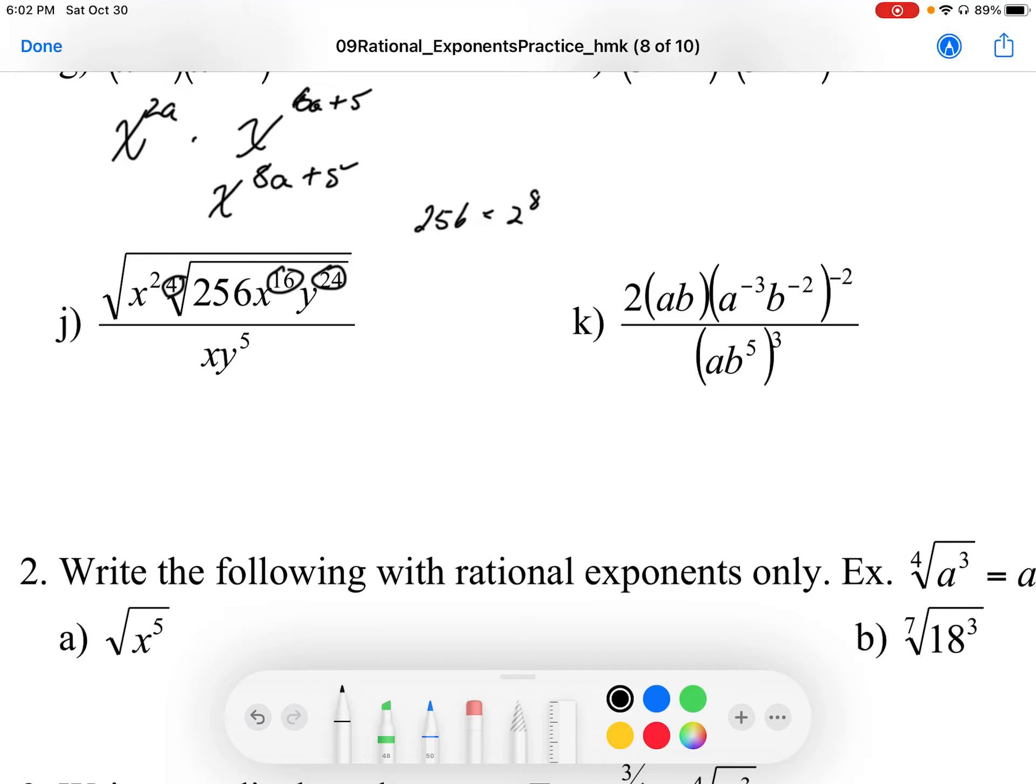I'm just going to get rid of some of the stuff here. If we replace that 256 with 2 to the power 8, then it's going to look like square root x squared. Well, the fourth root of 2 to the power 8 is 2 to the power 2.